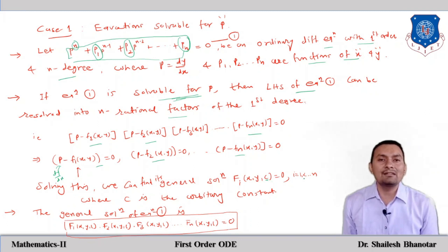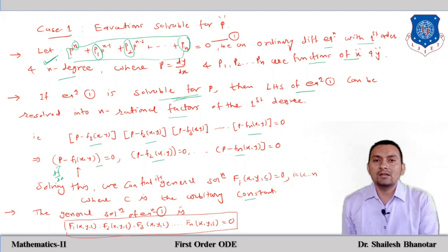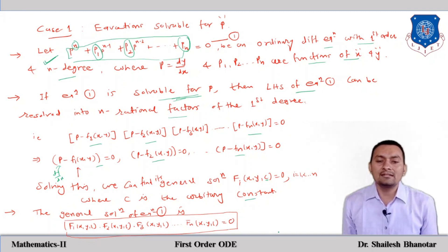Since each equation has order one, its solution has only one arbitrary constant c. The general solution is the product of all individual solutions: f1(x,y,c) · f2(x,y,c) · ... · fn(x,y,c) = 0.